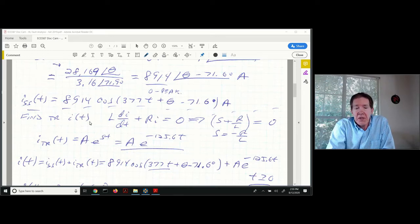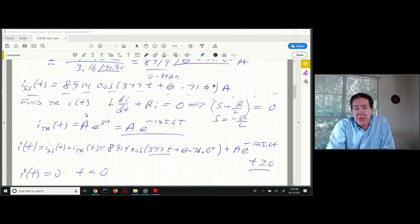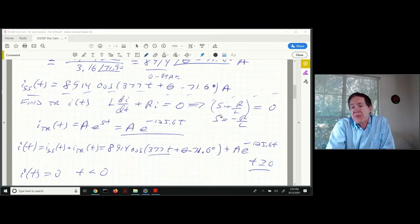The next thing we need to do is find the transient portion of this current. We solve for this circuit with no forcing function: L di/dt plus Ri equals zero. If I substitute s wherever I see di/dt, I can write a characteristic equation. s plus R/L is my characteristic equation, solving for the root when this equals zero gives s equals minus R/L.